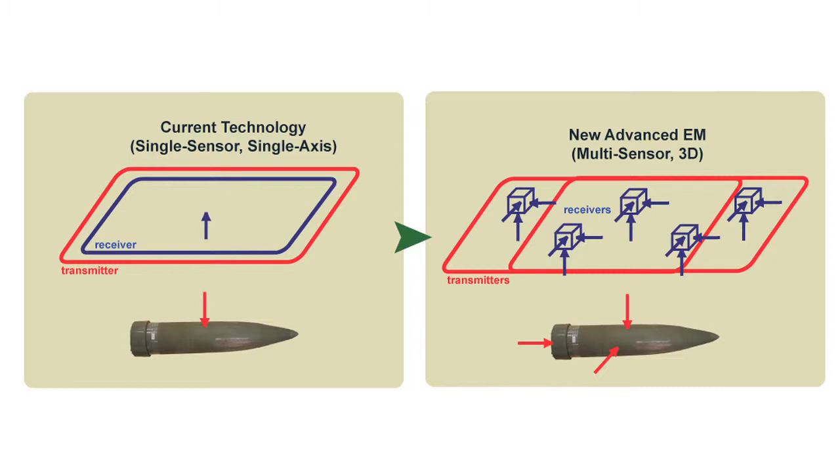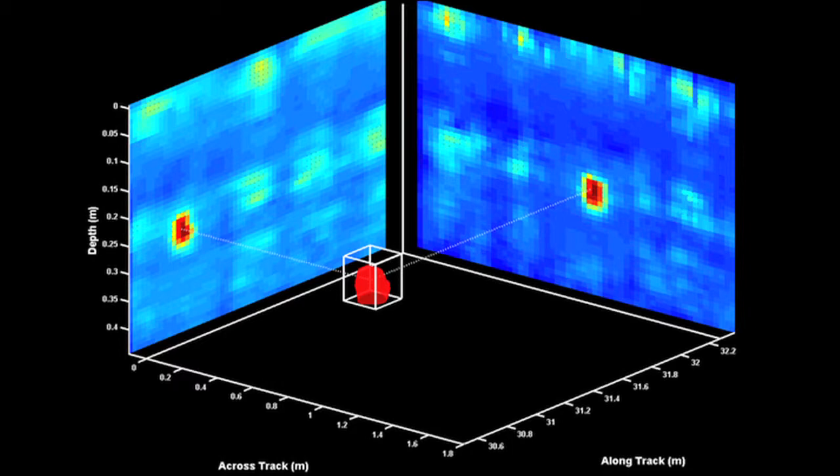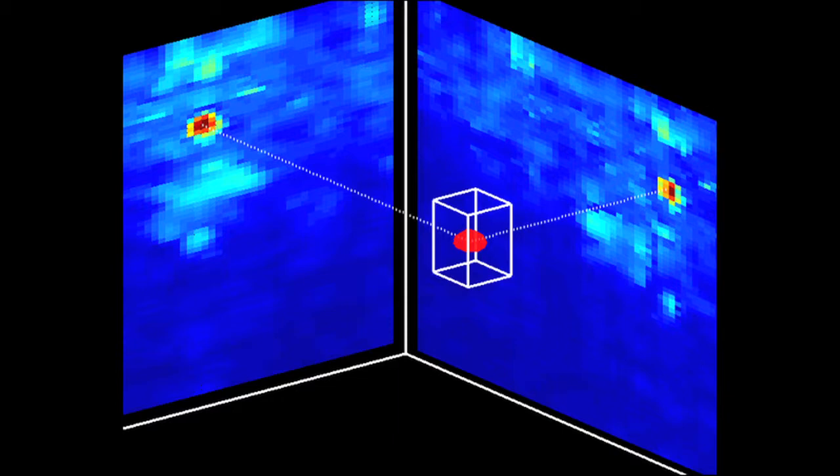One of the things that our company is really working on is what we call advanced electromagnetic sensors. These are actually really kind of fancy metal detectors now. Instead of sensing in one dimension as you traverse the ground and make a map, we now have three dimensional systems that can illuminate targets from all three directions, all three orthogonal directions.